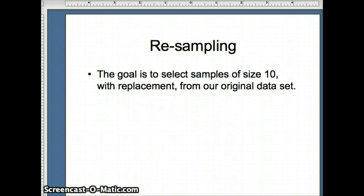So here's our goal. Our goal is going to be to select samples of size 10. Why 10? Because we're starting with 10 numbers. If you started with 40 numbers, you would select samples of size 40. If you started with 20 numbers, you would select samples of size 20. So you're selecting samples of size 10 with replacement from the original data set so that your samples have the same number of elements as the original data set.